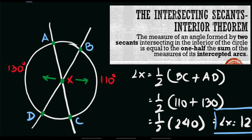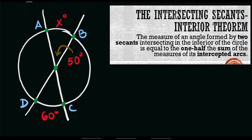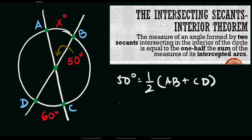Let's solve our third example. This time we have the interior angle equal to 50 degrees, arc AB equals x, and arc DC equals 60 degrees. We use the same formula: the interior angle equals one half of the sum of its intercepted arcs. So 50 degrees equals one half of arc AB, which is x, plus arc CD, which is 60 degrees.